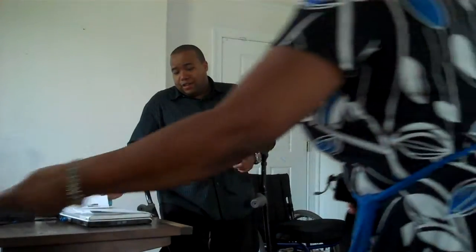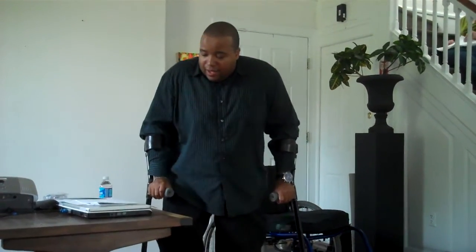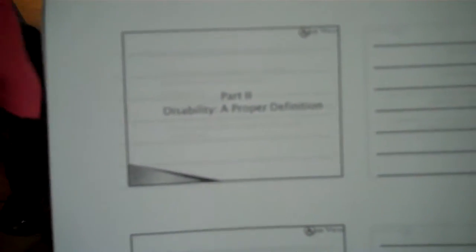On to part two: disability, a proper definition. According to the Americans with Disabilities Act, the definition of disability is a physical or mental impairment that substantially limits one or more major life activities or major bodily functions of such individual, having a record of such an impairment, or being regarded as having such an impairment.